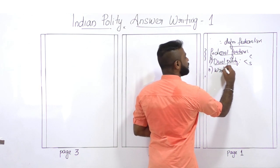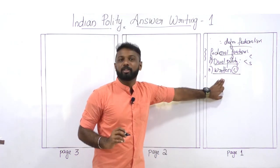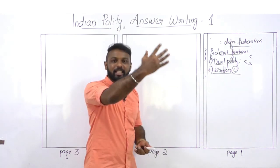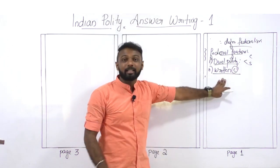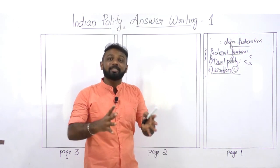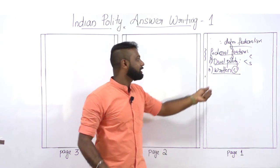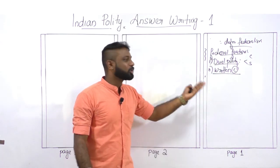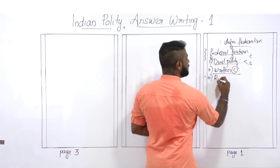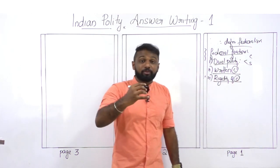The second federal feature is a written Constitution — underline that. The importance of a written Constitution is that the power demarcation is clearly mentioned in it, and both the central and state governments must act according to its provisions. They cannot exceed their powers; the limitation is mentioned in the written Constitution itself. The Seventh Schedule mentions the Union List, State List, and Concurrent List, showing that power is clearly demarcated.